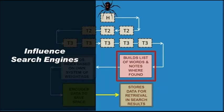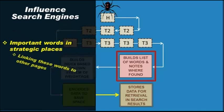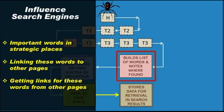You can do that mainly in three steps: one, by placing the important words strategically in the page to convince the search engine of their usefulness; two, by linking those words to other pages; and three, by getting links for those words from other pages. In this course we will discuss the first step in detail and also look at how you can improve the quality of the web content with an eye on search engines.